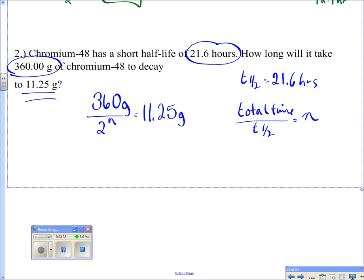So my goal here is to solve for n. So if I can solve for n, I can work this out. So if I take 360, and I'm going to multiply both sides by 2 to the n, this is going to cancel out the 2 to the n over here. And then I'm going to divide both sides by 11.25 grams. So if I work that out, 360 divided by 11.25 is 32. So I know that 32 is equal to 2 to the n.